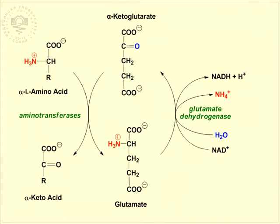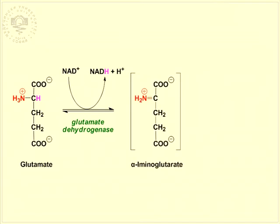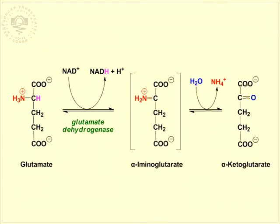Thus, in transdeamination, not only glutamate but other amino acids too are degraded with synthesis of ATP. ATP is formed because the hydrogen released is directed to the respiratory chain. In eukaryotes, this is the major pathway for removal of nitrogen from the amino acids. Glutamate dehydrogenase is a mitochondrial enzyme. The oxidation is carried out by transfer of a hydride ion from the alpha-carbon atom of glutamate to NAD+, yielding an unstable alpha-iminoglutarate which is hydrolyzed to alpha-ketoglutarate and ammonia. Alpha-ketoglutarate is then used in a subsequent transamination reaction.